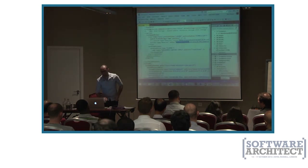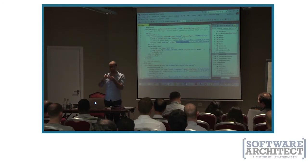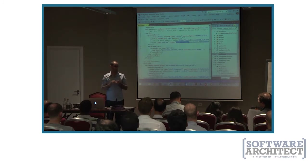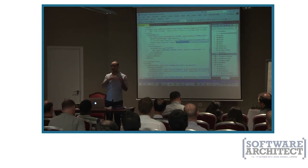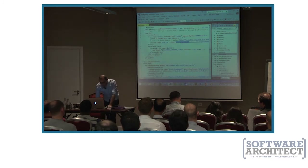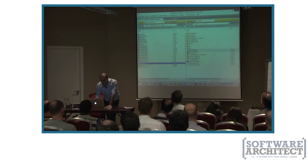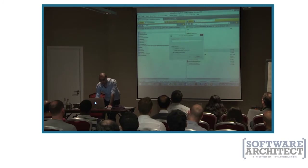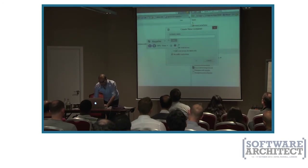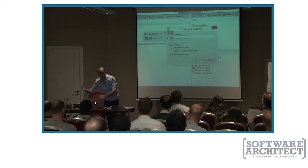To summarize this part: we created blob storage accounts, uploaded files to blob storage, changed our code to download and upload content to blob storage, and for public resources we pointed HTML files to use those public resources. When you create a container, you can select whether it's public or private. When it's private, no one can access it through the URL unless they provide the primary key or a one-time special access code.